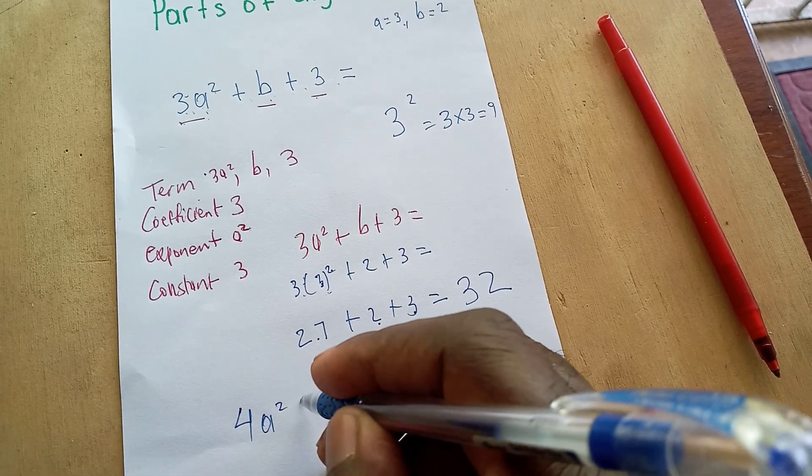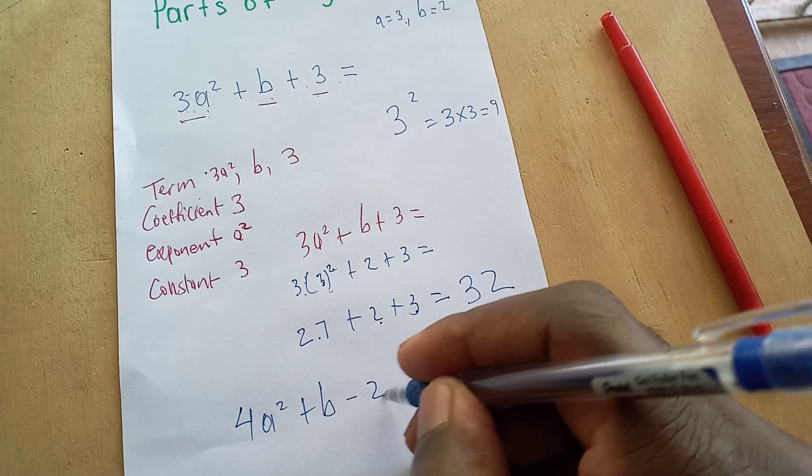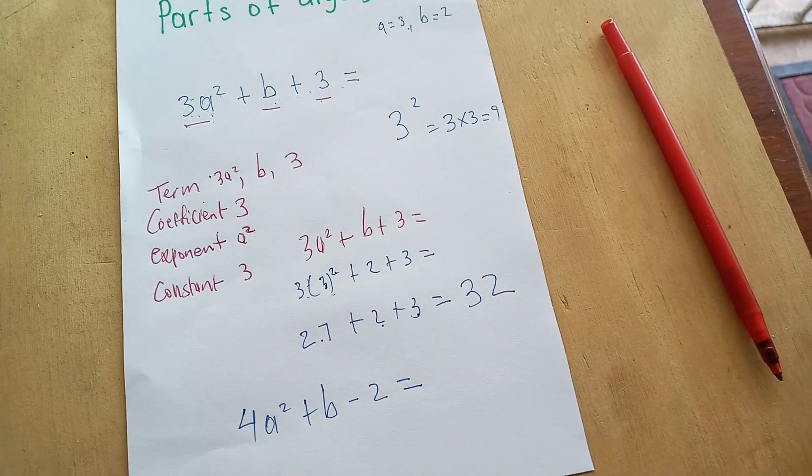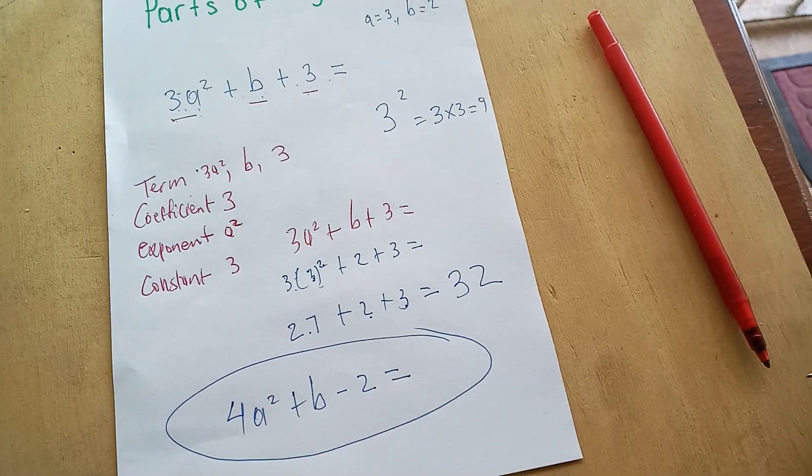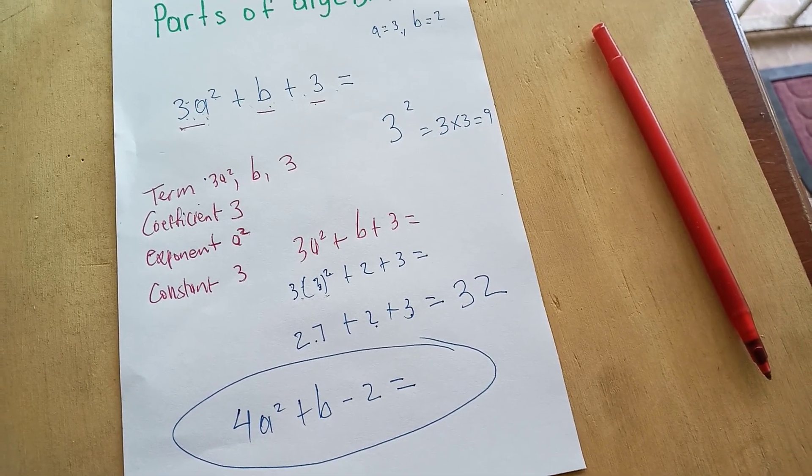4a² + b - 2 equals. Try this one for yourself and tell me what your answer is going to be. 4a² plus one for you.